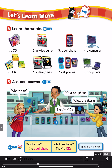Number 1: What's this? It's a cell phone. Number 2: What's this? It's a computer. Number 3: What are these? They're cell phones. Number 4: What are these? They're CDs.